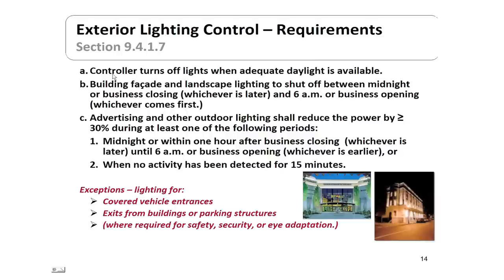For the exterior of the building, controls are needed that turn off lights when adequate daylight is available. Building facade lighting and landscape lighting are permitted but must be shut off between midnight or business closing — whichever is later — and 6 a.m. or business opening. Similar requirements exist for advertising and other outdoor lighting, which must reduce power by 30% during unneeded periods. Exceptions include covered vehicle entrances, building exits, parking lot structures, and where requirements exist for safety, security, or eye adaptation.